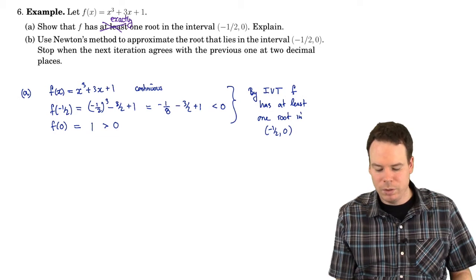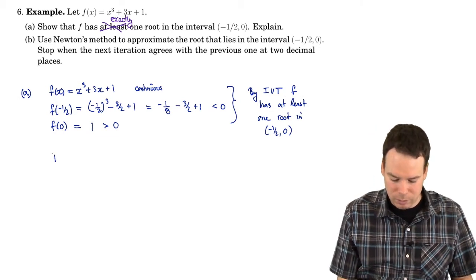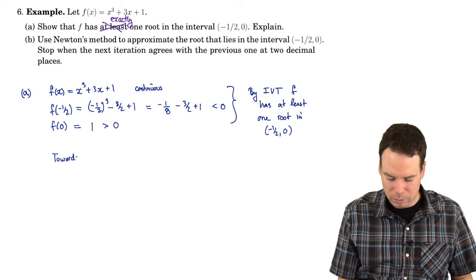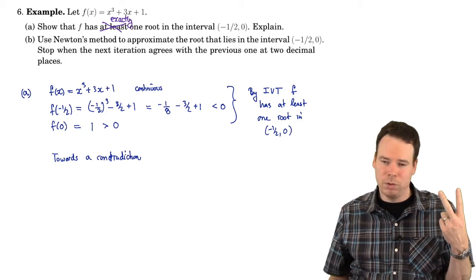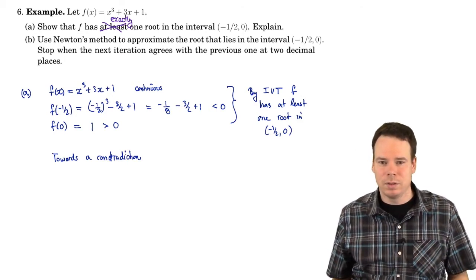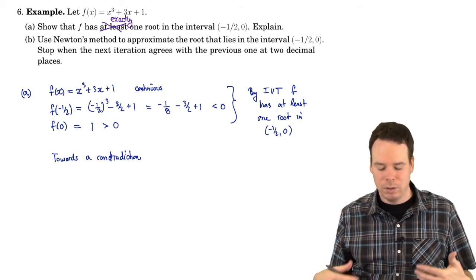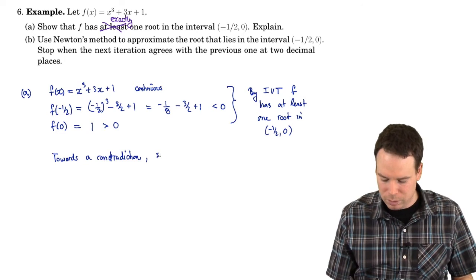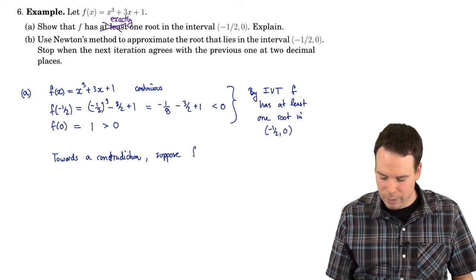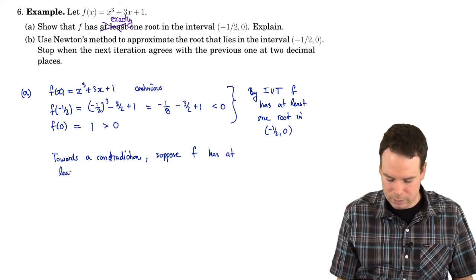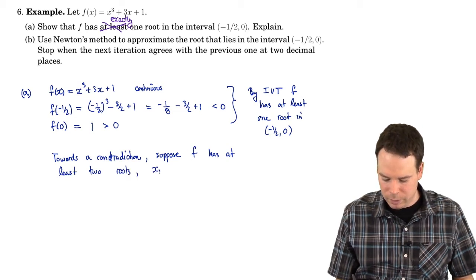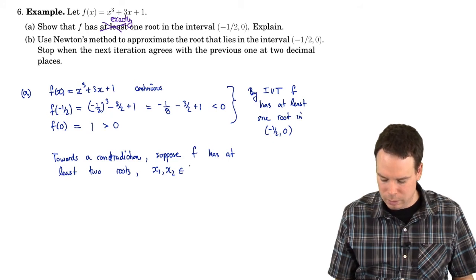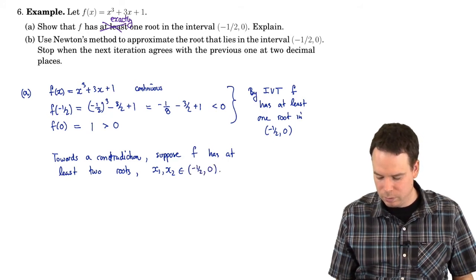We have at least one root. But we want to show that it has exactly one root, so we're going to suppose that there's more than one root and try to get a contradiction. Towards a contradiction, suppose f has at least two roots, and we'll call them x1 and x2 in the interval negative one-half to zero.